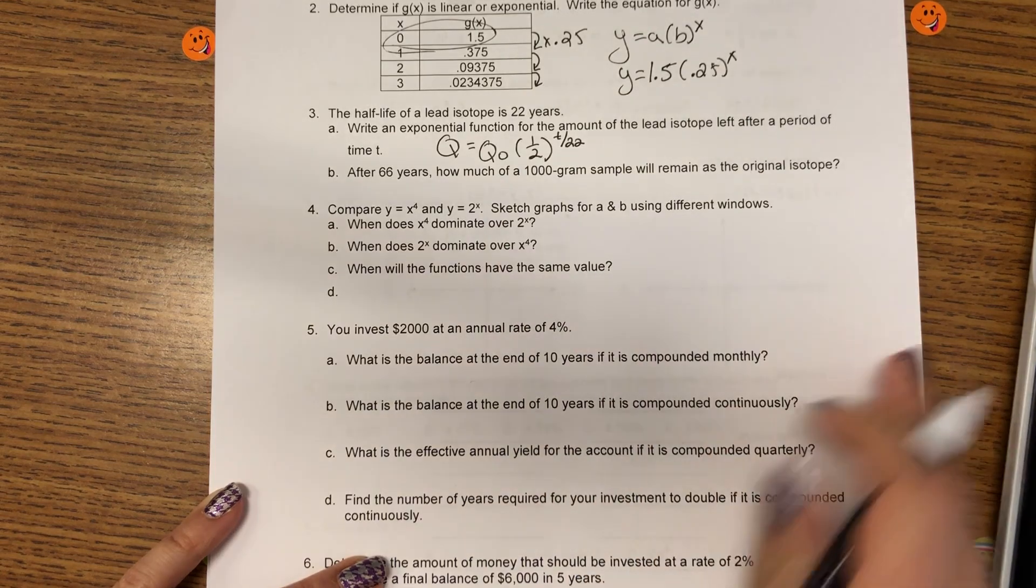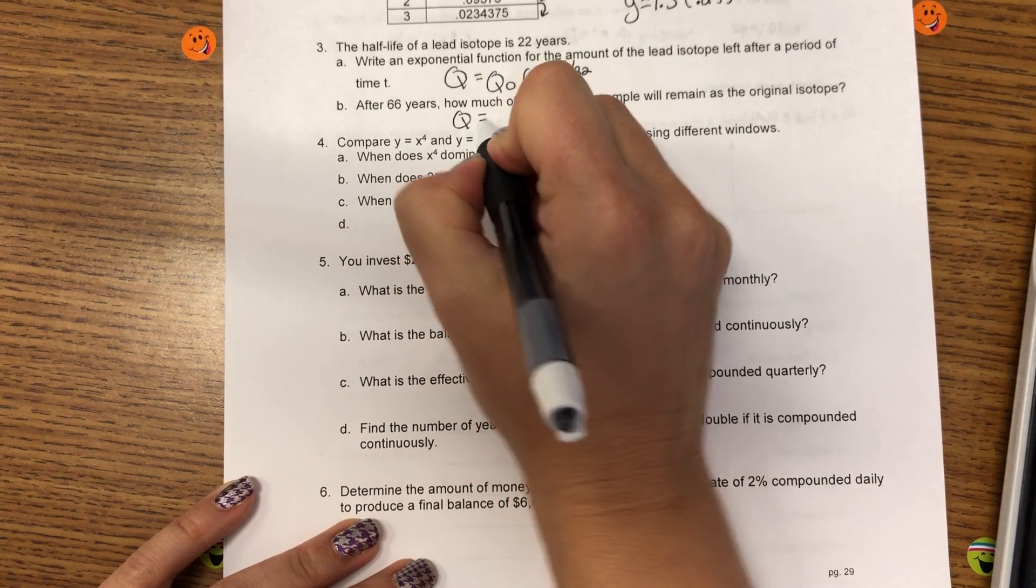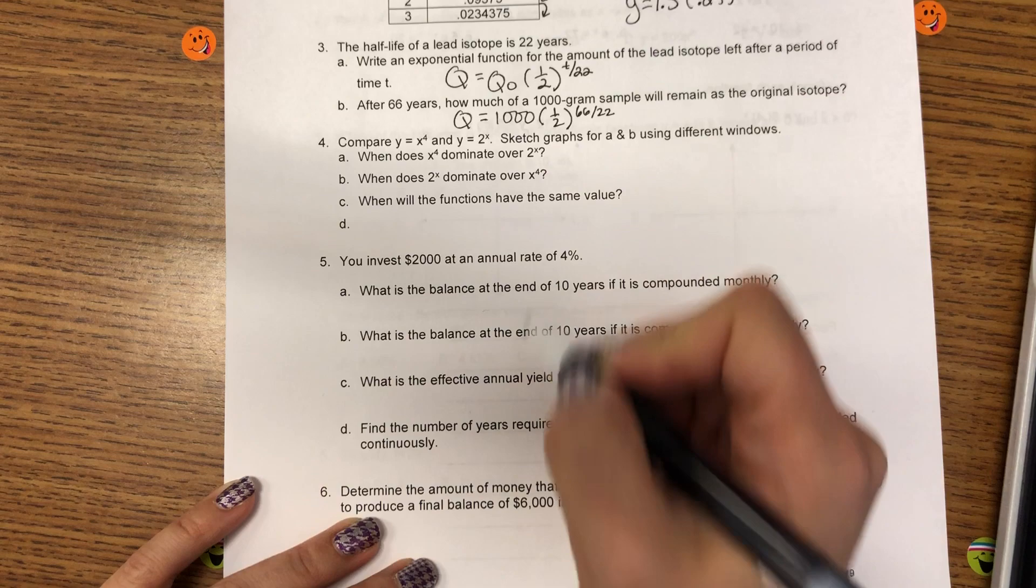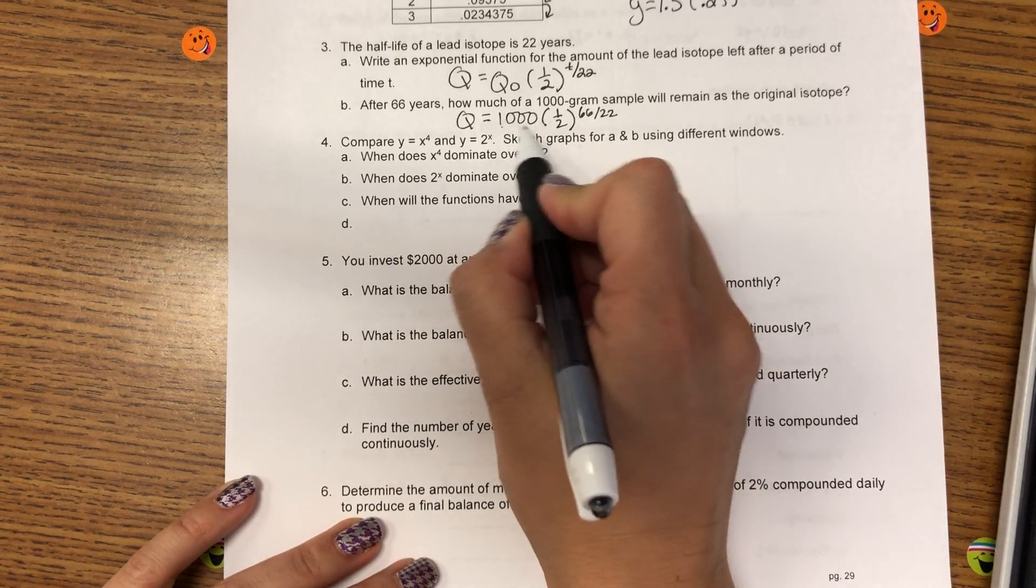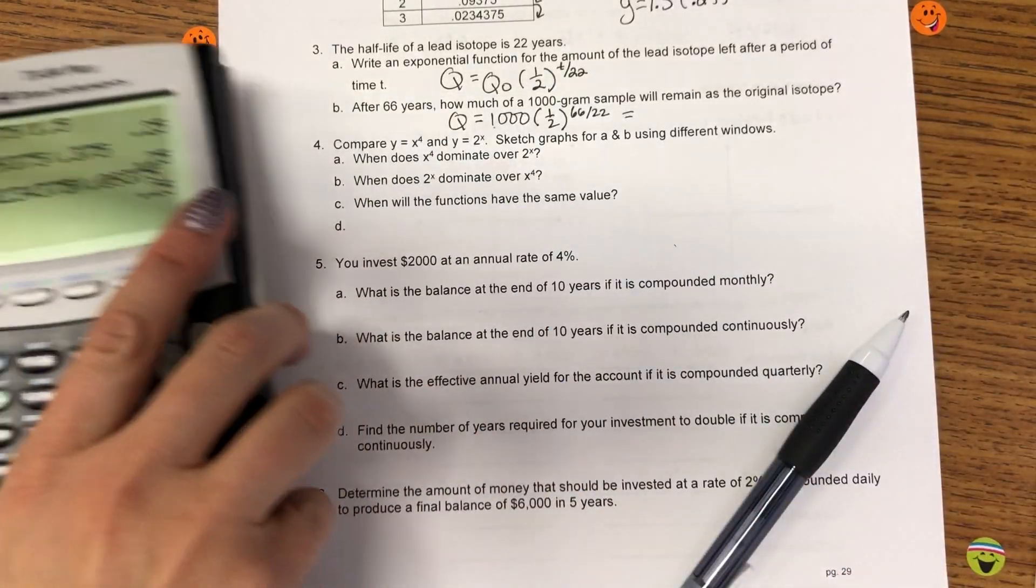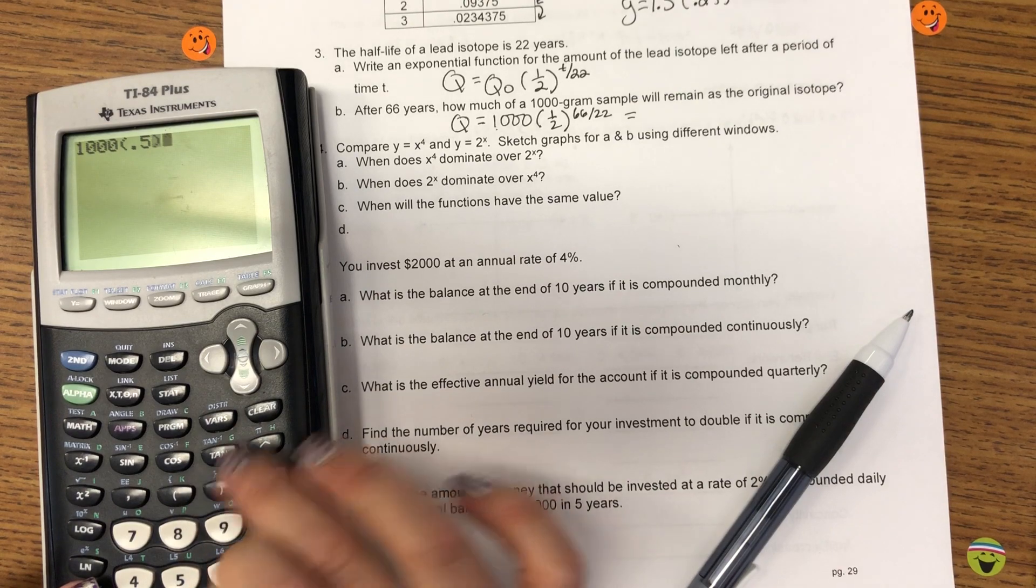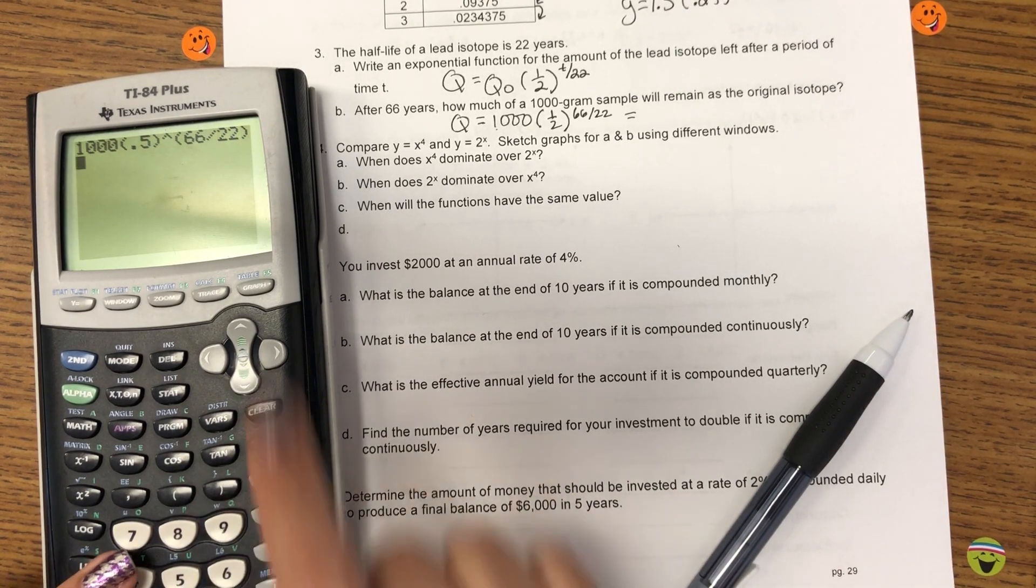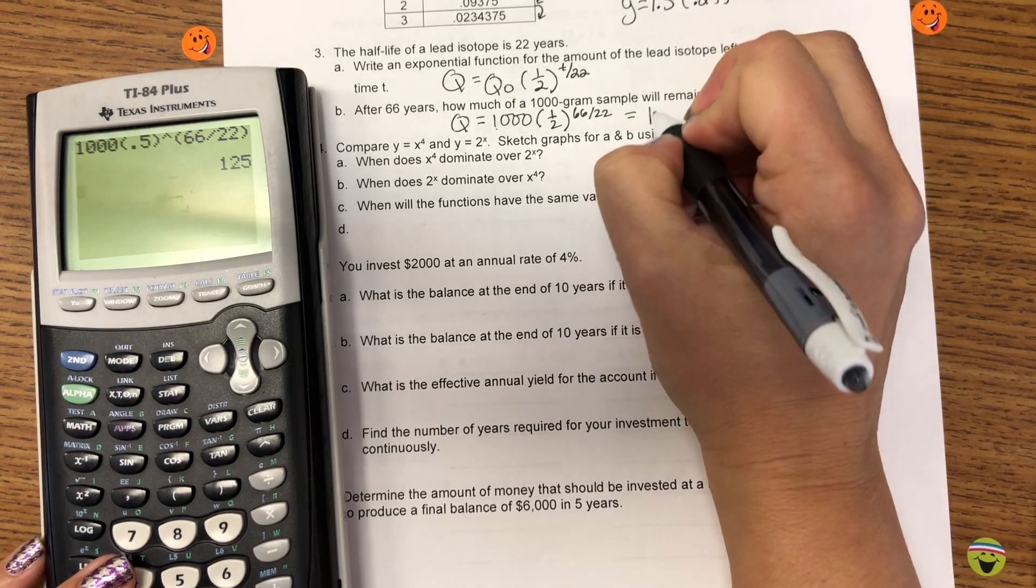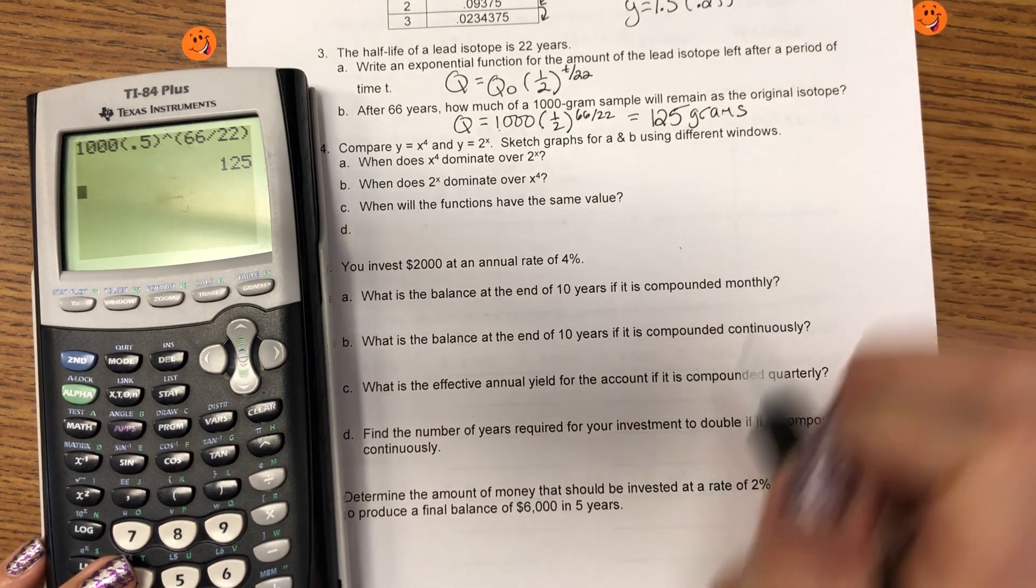Okay, number three. The half-life. Write a model. Alright, doesn't tell me an initial value. Half-life T over 22 years. So, that's the half-life value. After 66 years. How much of 1,000 grams will be left? So, 1,000 is the initial value.